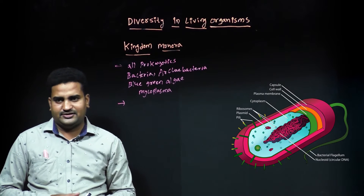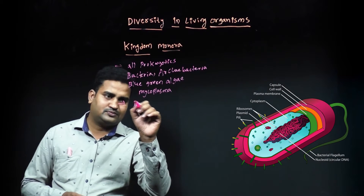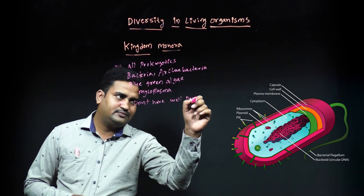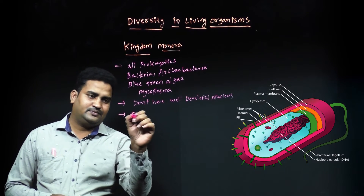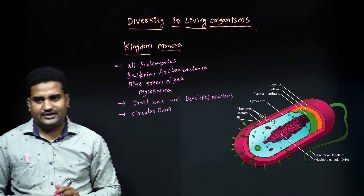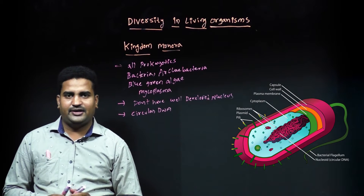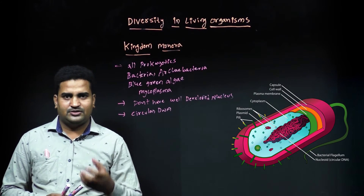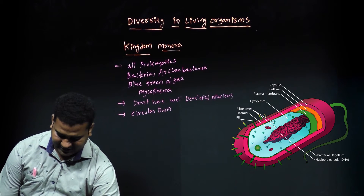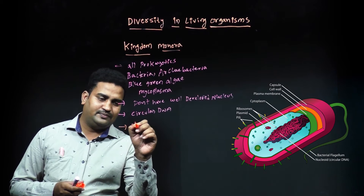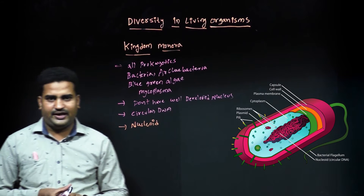Generally, prokaryotic organisms do not have a well-developed nucleus. They contain circular DNA, which is present in the protoplasm and is held together by some proteins in a definite position. This kind of arrangement of prokaryotes is known as the nucleoid. They do not contain a nucleolus.